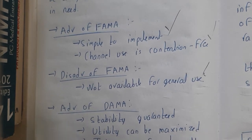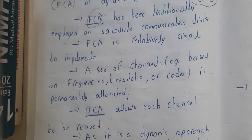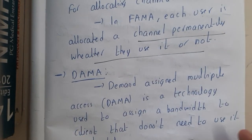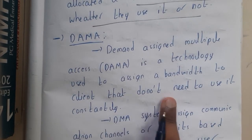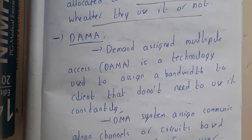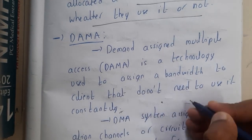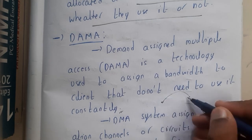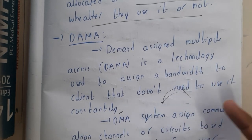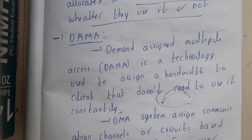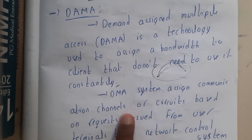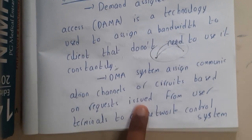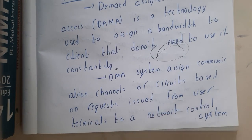DAMA, Demand Assignment Multiple Access, is a technology used to assign bandwidth to a client that does not need to use it constantly — like phone calls. You don't communicate with your friend 24/7; it might be once a day, once a week, or once a month. A DAMA system assigns communication channels based on request, and once your usage is done, you free the channel again.